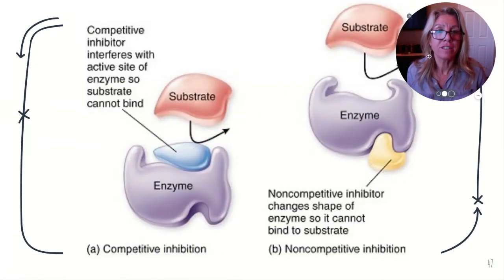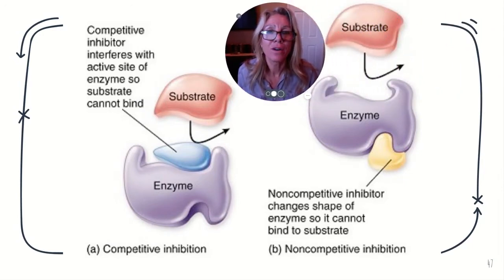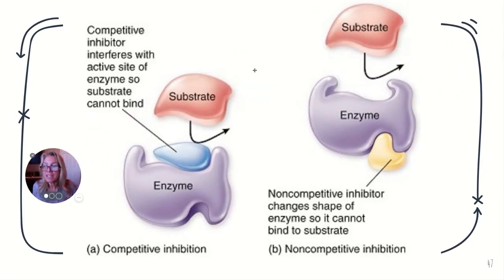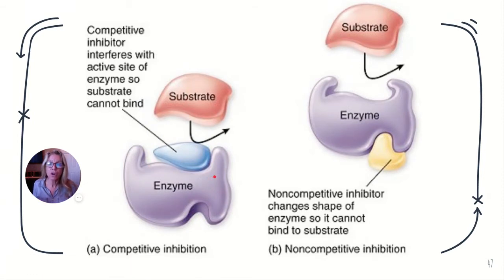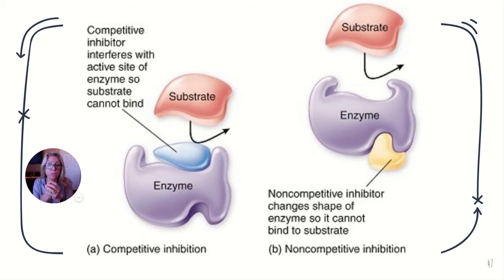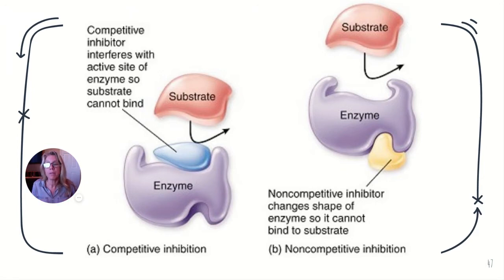Now let's talk about inhibitors. There are competitive inhibitors and non-competitive inhibitors. Competitive inhibitors compete with the substrate for the active site. For instance, carbon monoxide will compete with oxygen for your hemoglobin, and once it binds, it will not let go — that's a competitive inhibitor and it is irreversible. Exposure to too much carbon monoxide can make you sleepy, then nauseous, and can ultimately kill you.